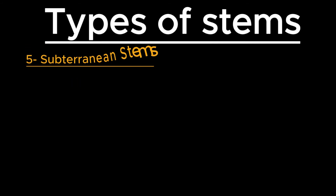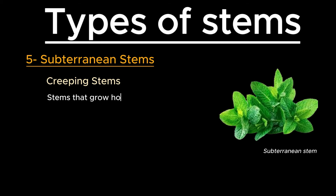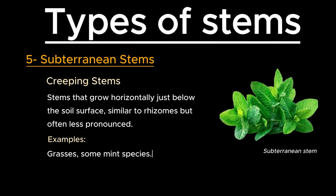Next are subterranean stems. These are creeping stems that grow horizontally just below the soil surface, similar to rhizomes but often less pronounced. For example, grasses and some mint species.